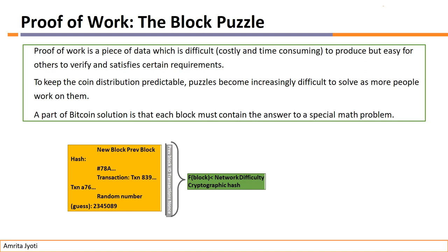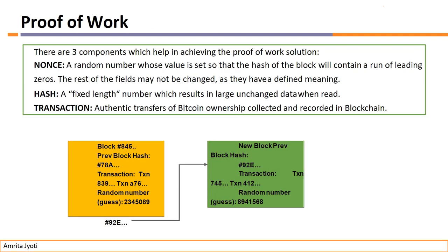Two important words for you: Proof of Work and hash function. Basically, a hash is a fixed-length number which results from large or unchanged data when read. Actually, a hash is a one-way data generator — for any data, a fixed number is generated, which we call a hash number. In cryptography, SHA-256 and MD5 are types of hashing.